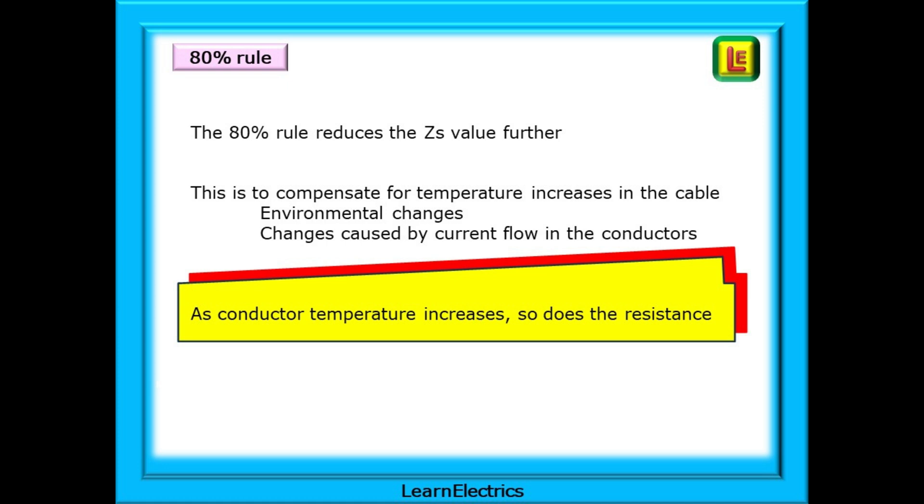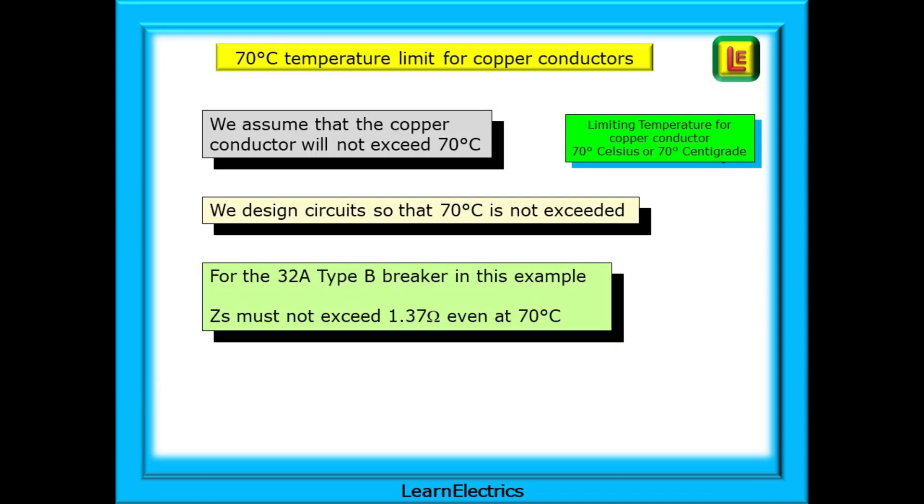We might lose our 160 amps again. We have a limiting temperature for cables and for copper conductors that limit is 70 degrees Celsius. We assume that the copper conductor will not exceed 70 degrees Celsius and so we design circuits so that 70 degrees centigrade is not exceeded. For the 32 amp type B breaker in this example ZS must not exceed 1.37 ohms even at 70 degrees C.